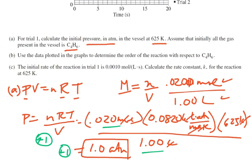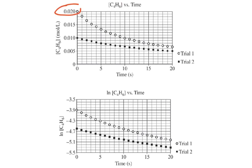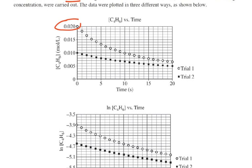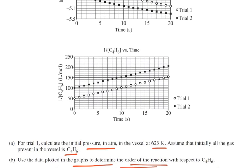Okay, B: use the data plotted in the graphs to determine the order of the reaction. Well, this is something you just kind of learn and memorize. If you have concentration versus time, if that's a straight line, which it's not, that is 0 order. If it's natural log of concentration versus time, if that's a straight line, which it's not in this case, that's first order. But if you have 1 over concentration versus time, and if that's a straight line, which it is, that means this must be a second order reaction.